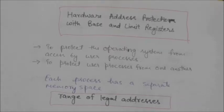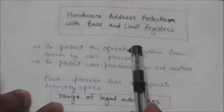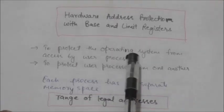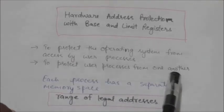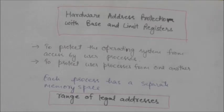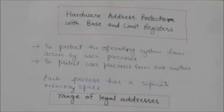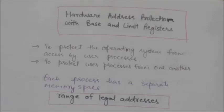Welcome back. In this tutorial we will study about hardware address protection with base and limit registers. When user processes are being executed, we must ensure correct operation to protect the operating system from being accessed by user processes, and to protect user processes from one another. We must have some way to prevent one user process from modifying the code or data structures of another user process or of the operating system.